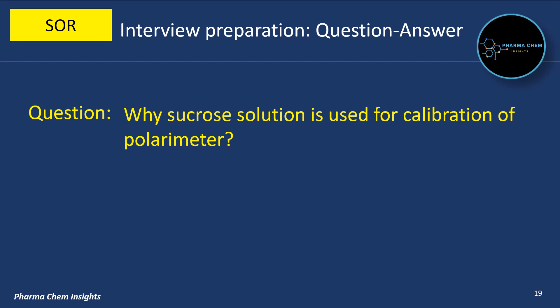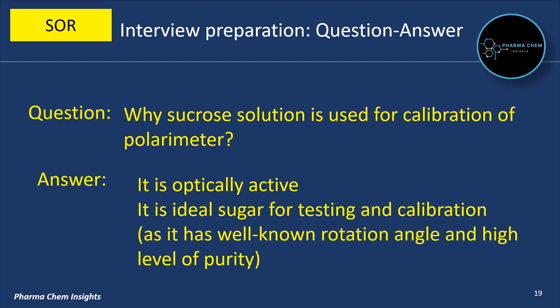Why is sucrose solution used for calibration of polarimeter? Sucrose solution is optically active. It is an ideal sugar for testing and calibration as it has a well-known rotation angle and high level of purity.